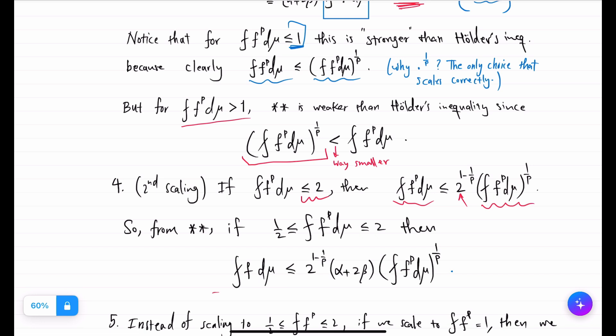And then double star gives us this. So we were able to put the root 1 over p at the cost of multiplying by a controllable number. So we have this inequality which is now Hölder's inequality for this regimen.